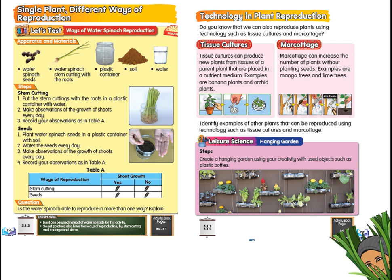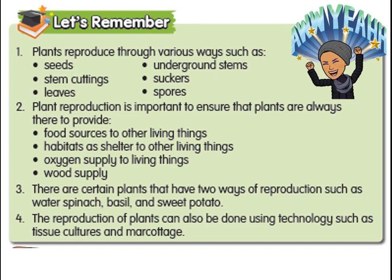I hope you remember the concept that certain plants can reproduce in more than one way. And on the next page, page 77, is about technology in plant reproduction. It's very simple — I just need you to refresh your mind and remember what we have learned.